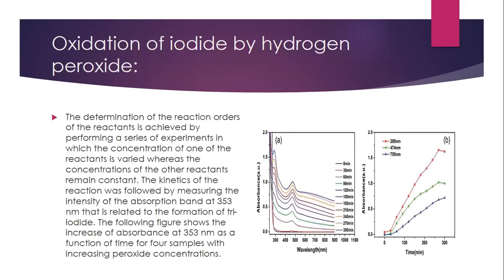For the oxidation of iodide by hydrogen peroxide, the determination of the reaction order is achieved by performing a series of experiments in which the concentration of one reactant is varied while the others remain constant. The kinetics of the reaction were followed by measuring the intensity of the absorption band at 353 nanometers, related to the formation of triiodide. The figure shows the increase of absorbance at 353 nanometers as a function of time for four samples with increasing peroxide concentrations.